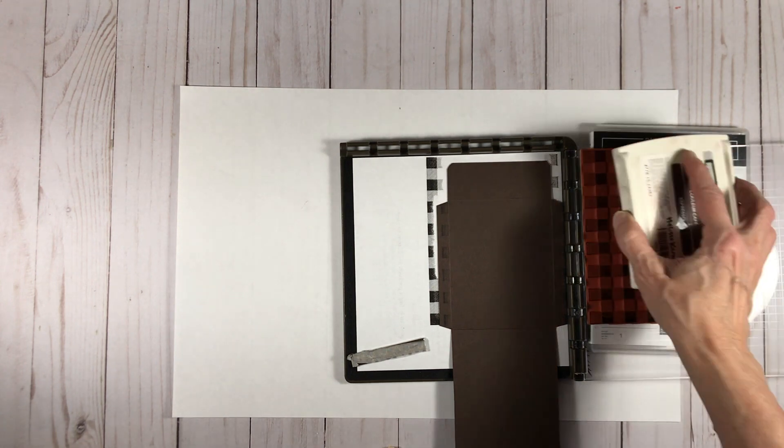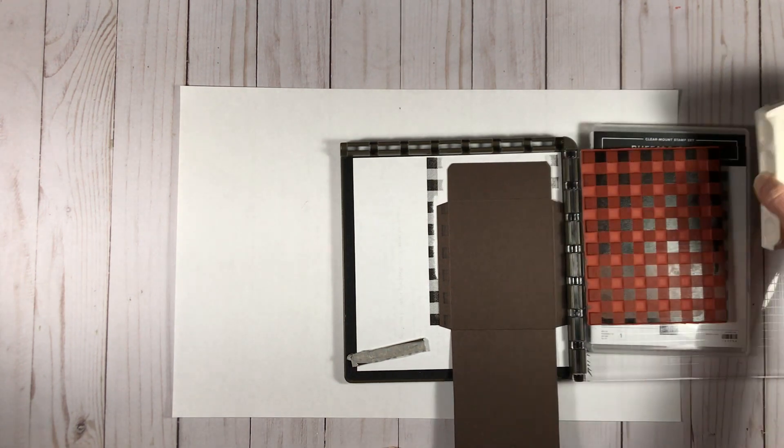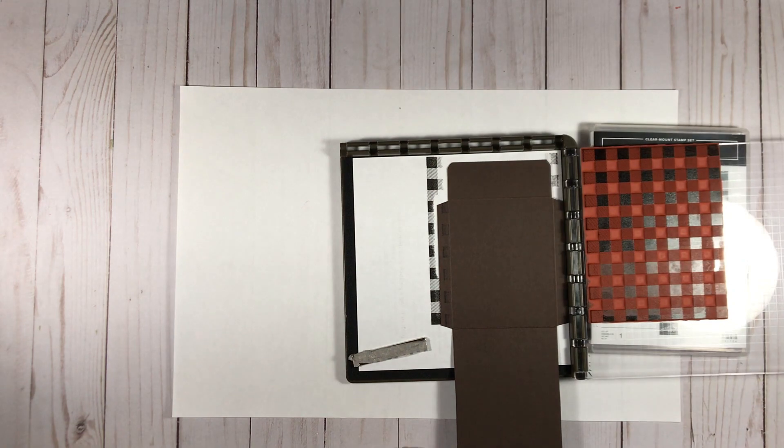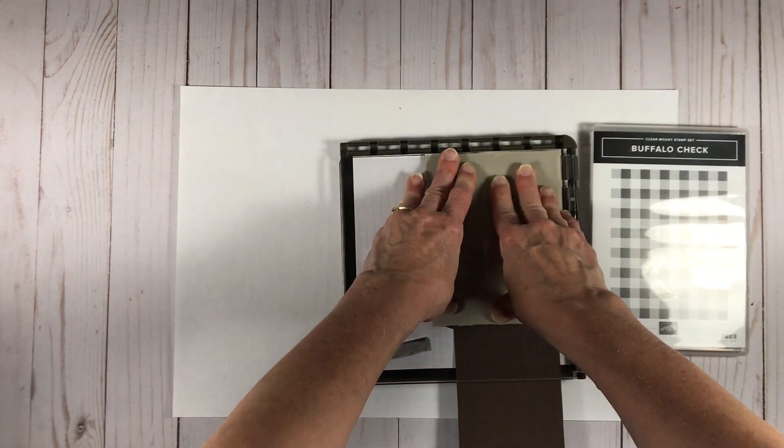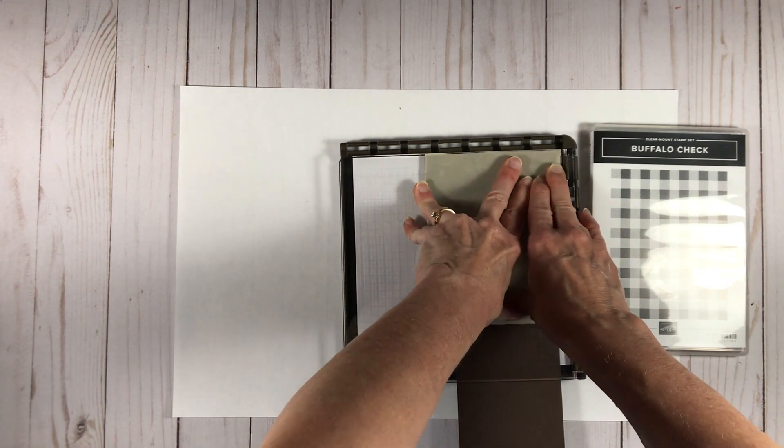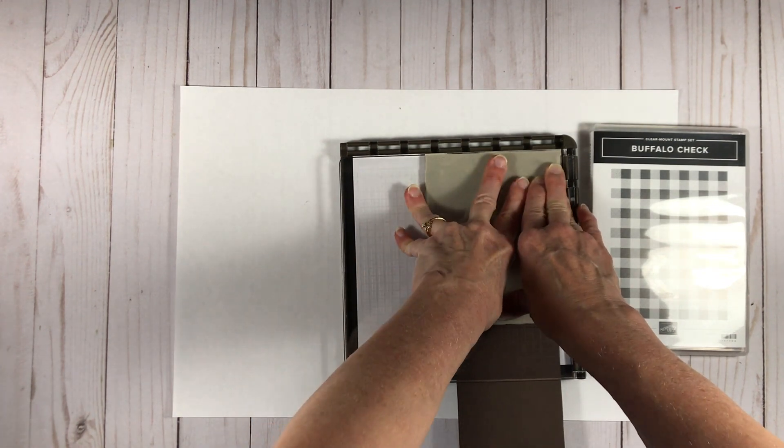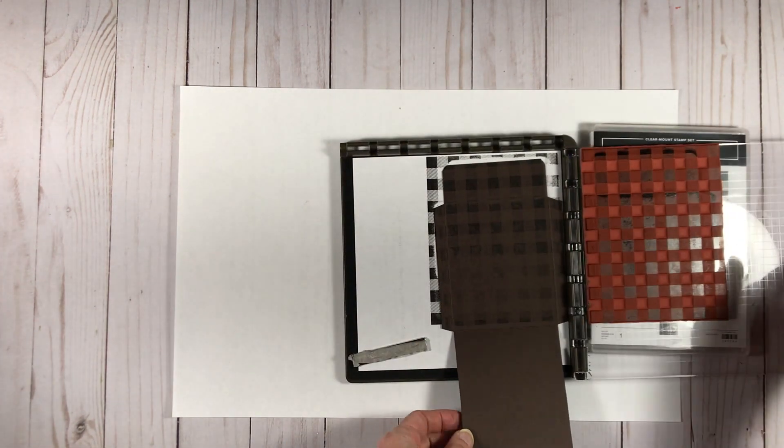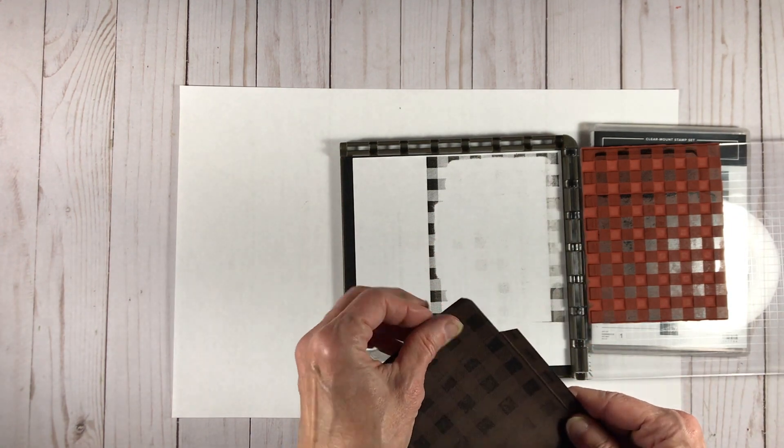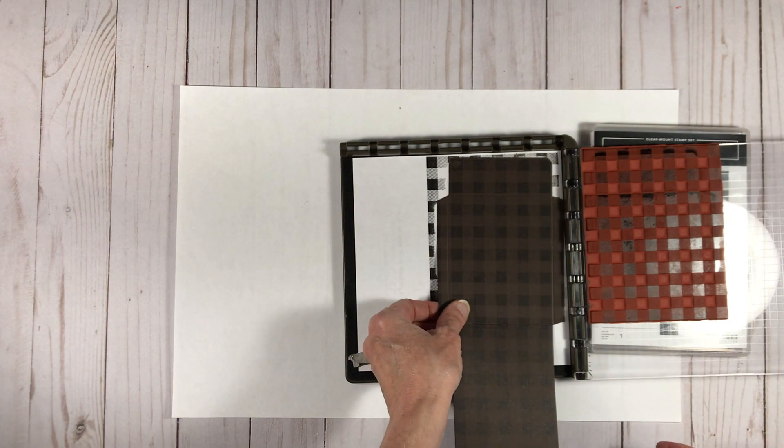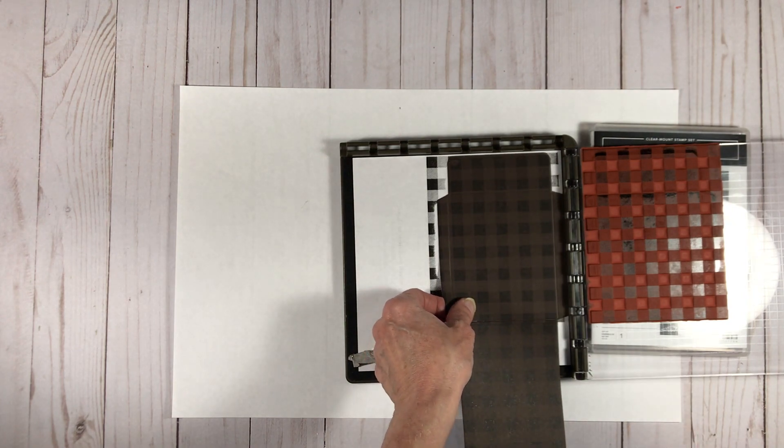So now I'm going to be stamping on what is really the inside of the gift card holder, and so I've only inked up the top of the Buffalo check stamp because I'm not concerned about the bottom portion of this section, just because it's going to be on the inside. The only part that's really going to show is that top flap which is going to get folded over and is going to show on the outside.